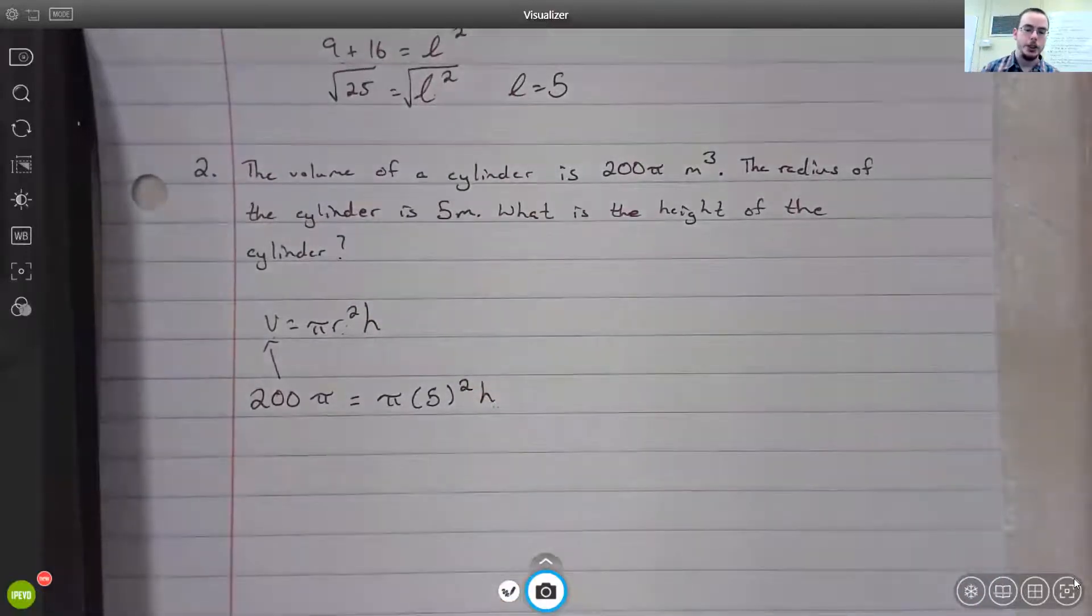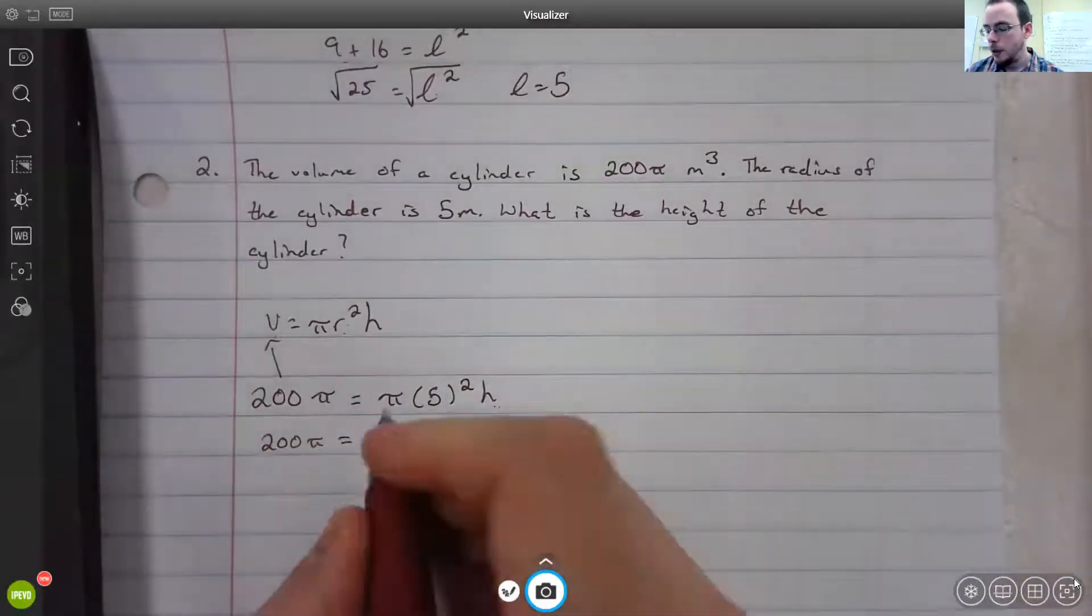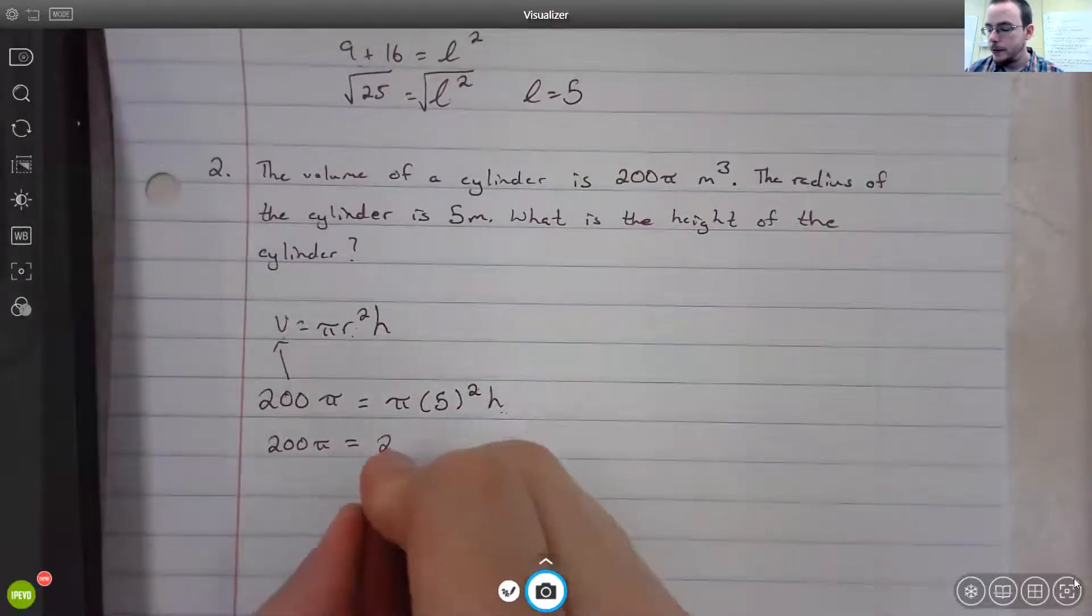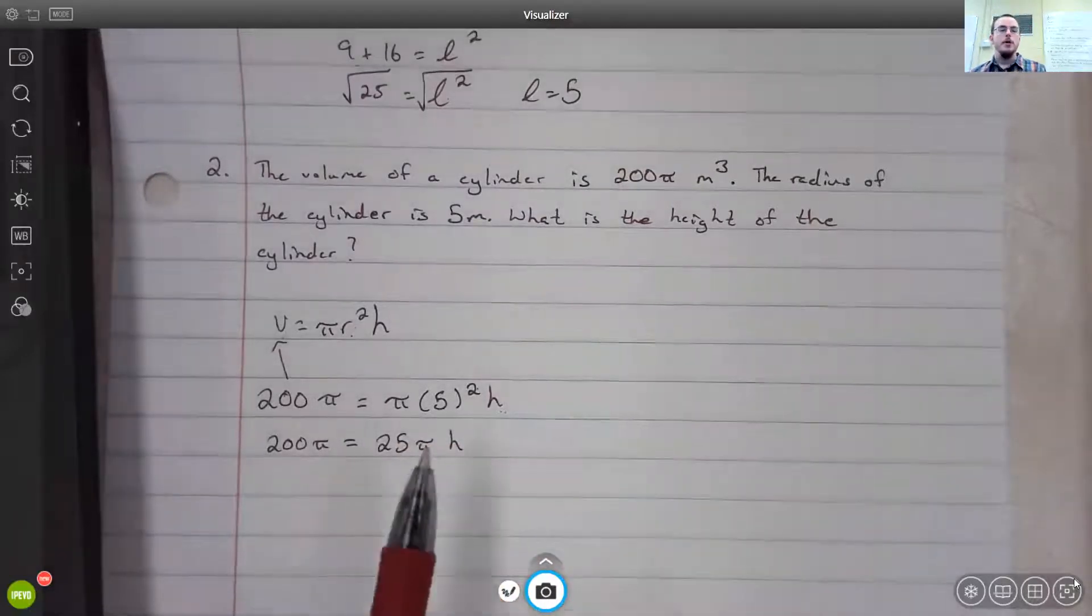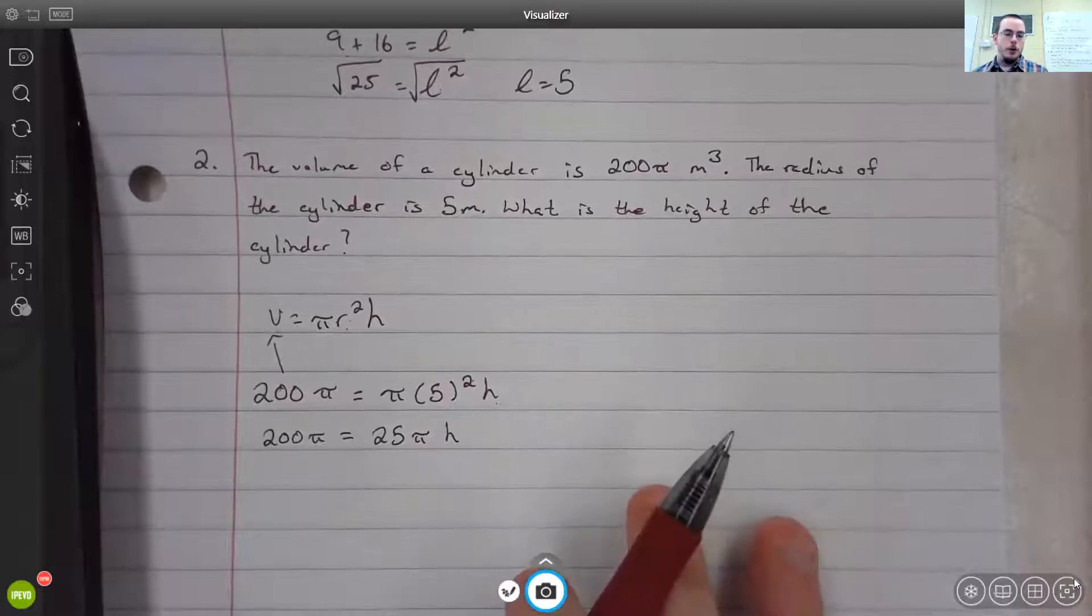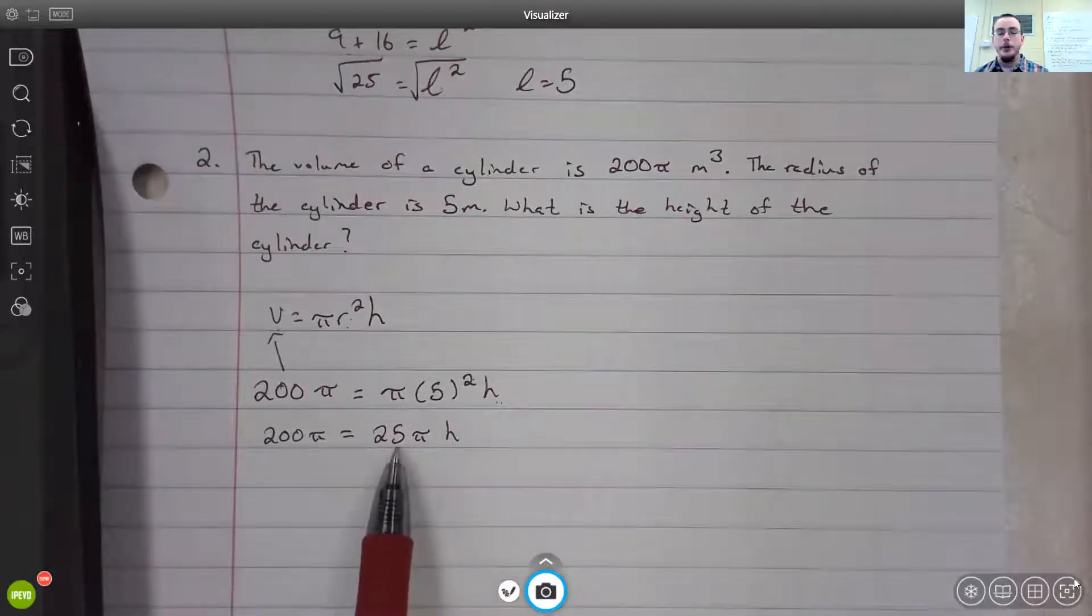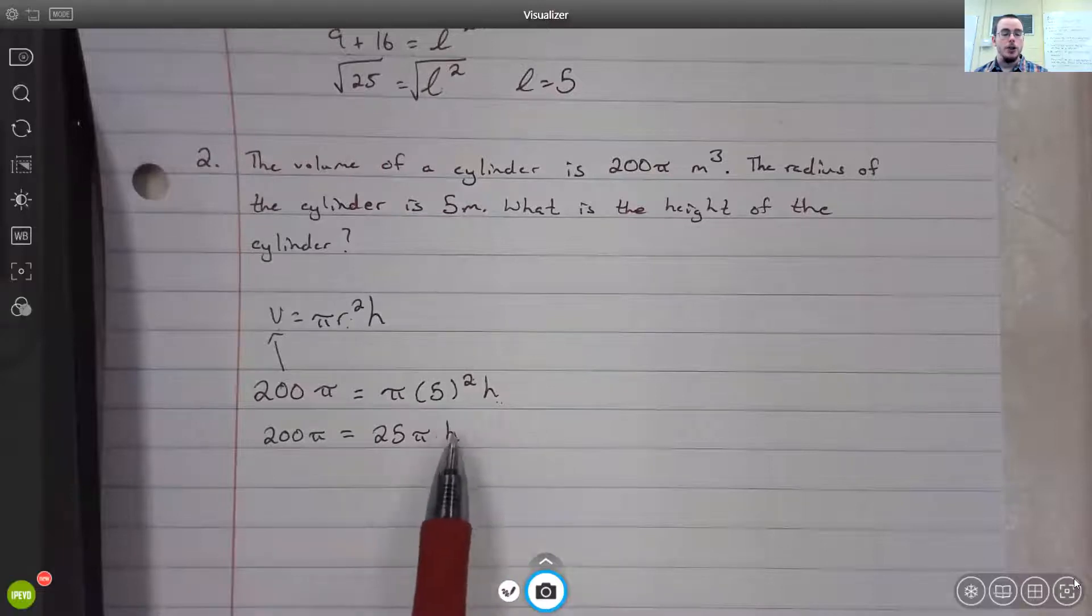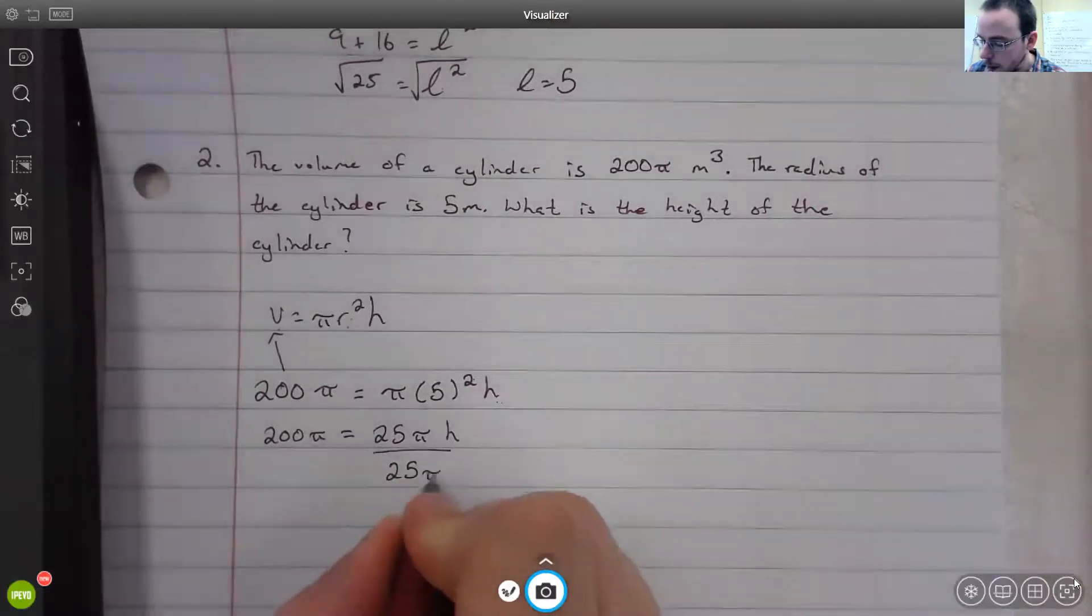There's nothing we can do with the 200π, so that just drops down. 5² is 25, so we have 25π times h. Normally when we solve for a variable with something in front of it, a coefficient, we need to divide by the coefficient. Here we have 25π being multiplied by h, so to get rid of it, we have to divide both sides by 25π.